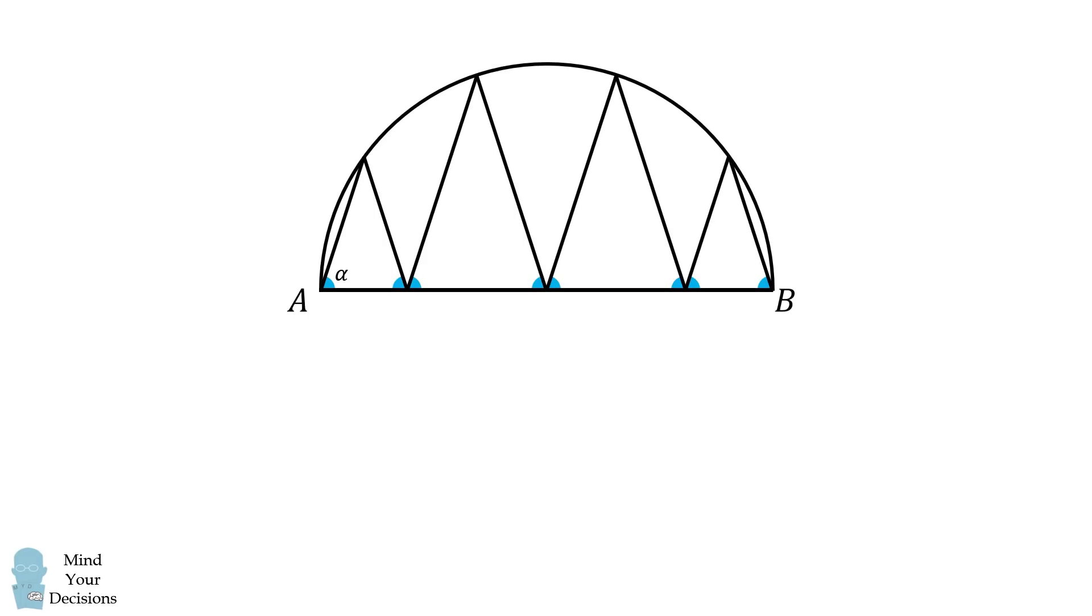To get started, we will first reflect the semicircle about the diameter AB. Next, we'll label some of these equal angles as alpha. Label the remaining angle in this triangle as beta.